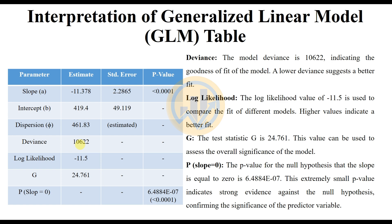The G-test statistic is 24.761, which can be used to assess the overall significance of the model. The p-value for the null hypothesis that the slope is equal to zero is less than 0.0001. This strongly rejects the null hypothesis, confirming the significance of the predictor variable.